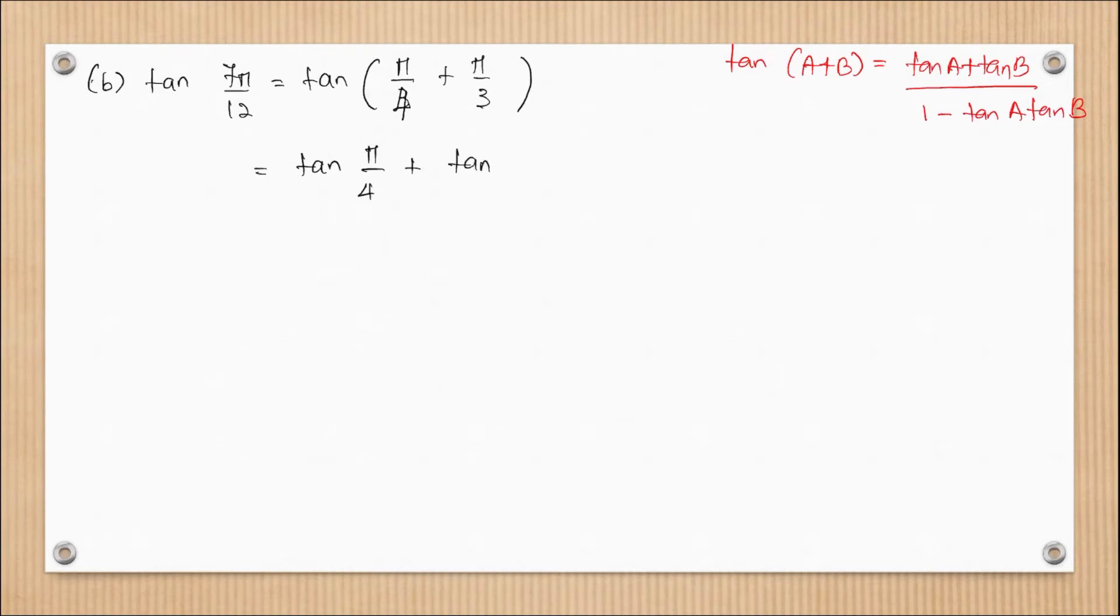Tan(A+B) equals (tan(A) + tan(B))/(1 - tan(A)tan(B)). So substitute in the formula: (tan(π/4) + tan(π/3))/(1 - tan(π/4)tan(π/3)). So tan(π/4), use your calculator, equals 1. Tan(π/3) is √3. And make sure your calculator is in radian mode.